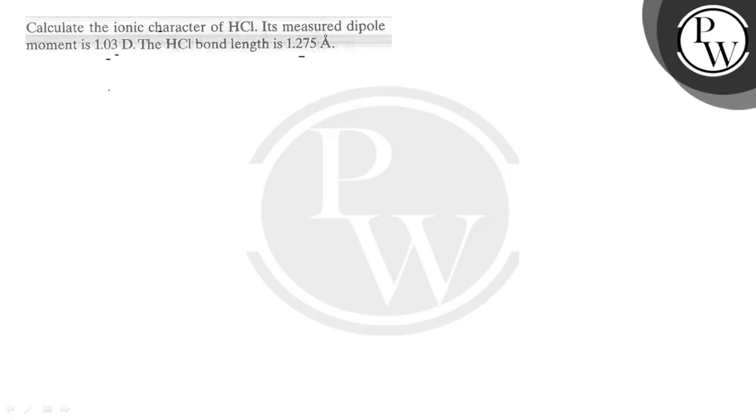We can calculate it as we know that the percentage ionic character is equal to theoretical dipole moment divided by measured dipole moment, which means calculated, into 100.